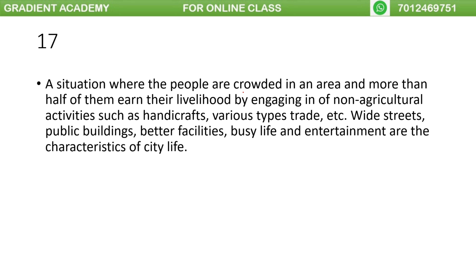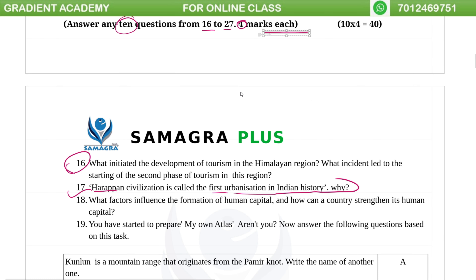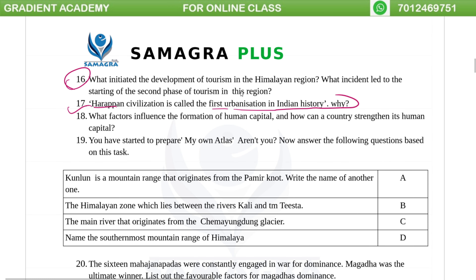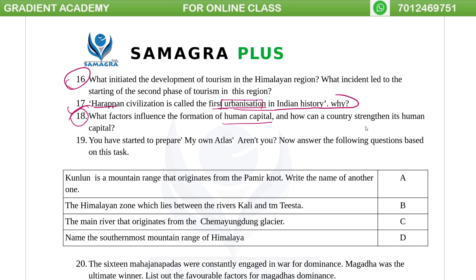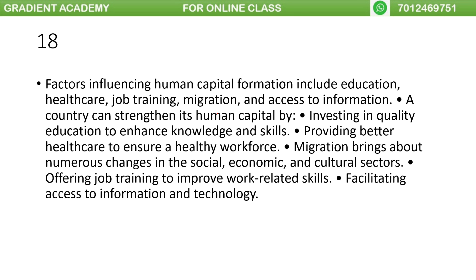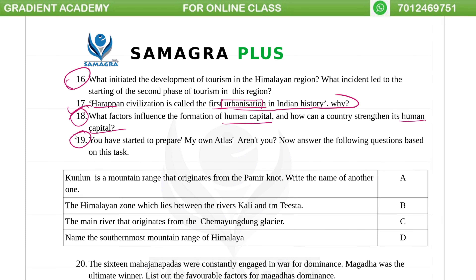There are streets, public buildings, and basic facilities in urban areas. The Arab civilization is the same as urbanization of human capital. The factors that influence the formation of human capital — and how can a country strengthen its human capital?